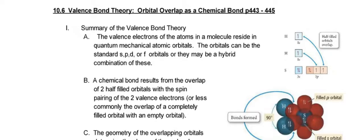Hey AP Chemsters, this is Mrs. Vandelloy bringing you Blank Wall Chapter 10 Part 6. This is the valence bond theory, the orbital overlap as a chemical bond.